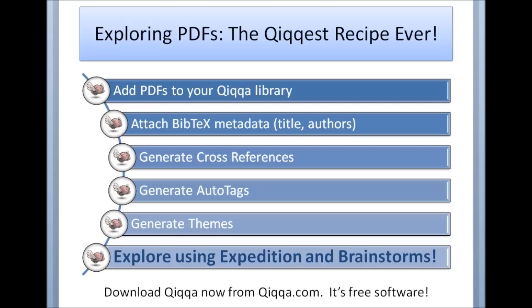Hello everyone, this is Jimmy. I'd like to give you a whirlwind tour of QUICKR, a free piece of software that I developed over the last three years while doing my PhD at the Computer Laboratory at the University of Cambridge. I needed more than just a reference manager — I needed a research manager that would guide me through my PDF reading over the course of my PhD. Something that would help me understand each PDF by placing it and its citations in context relative to all the other PDFs in my library, and guide me in deciding which PDF to read next out of hundreds of unread PDFs. I've found QUICKR immensely useful for exploring my own library of PDFs, and I hope you will too.